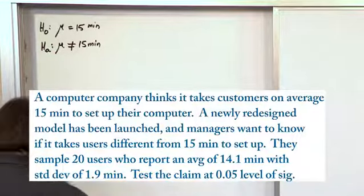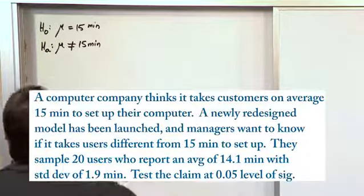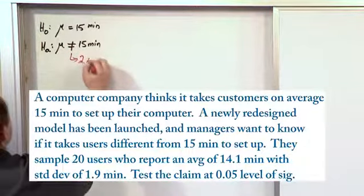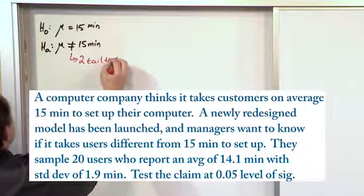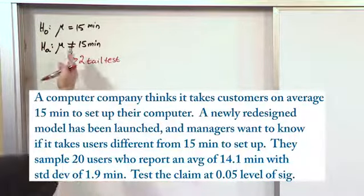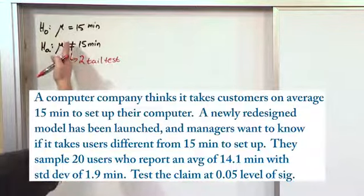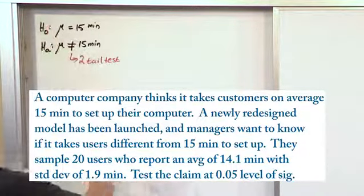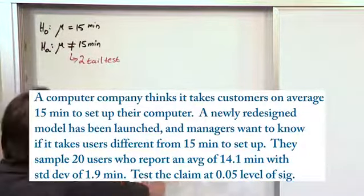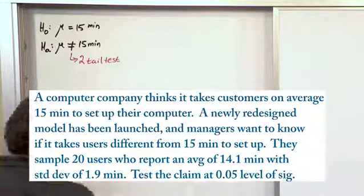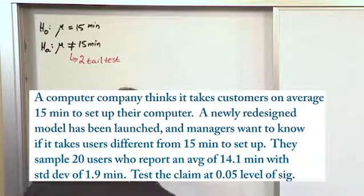Because it's equal versus not equal, this is a two-tail test. The reason it's two tails is because the new model might take longer than 15 minutes or less than 15 minutes. So we need to have area in both tails and see if we trip into any of those rejection regions.